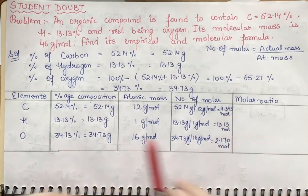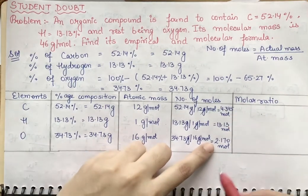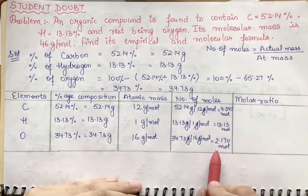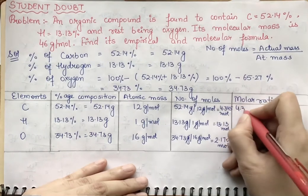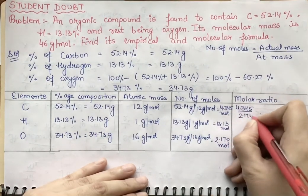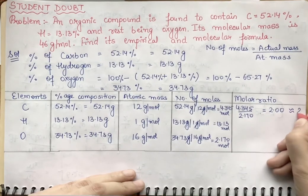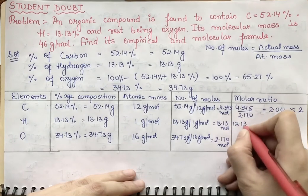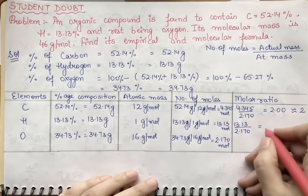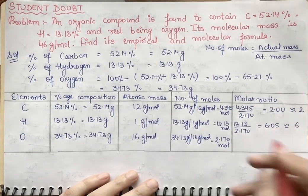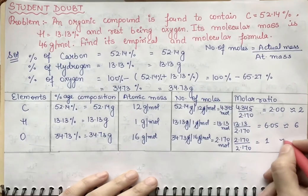To find the molar ratio, we divide all mole values by the smallest number of moles, which is 2.170. Carbon: 4.345 ÷ 2.170 ≈ 2.00. Hydrogen: 13.13 ÷ 2.170 ≈ 6.05, approximately 6. Oxygen: 2.170 ÷ 2.170 = 1.